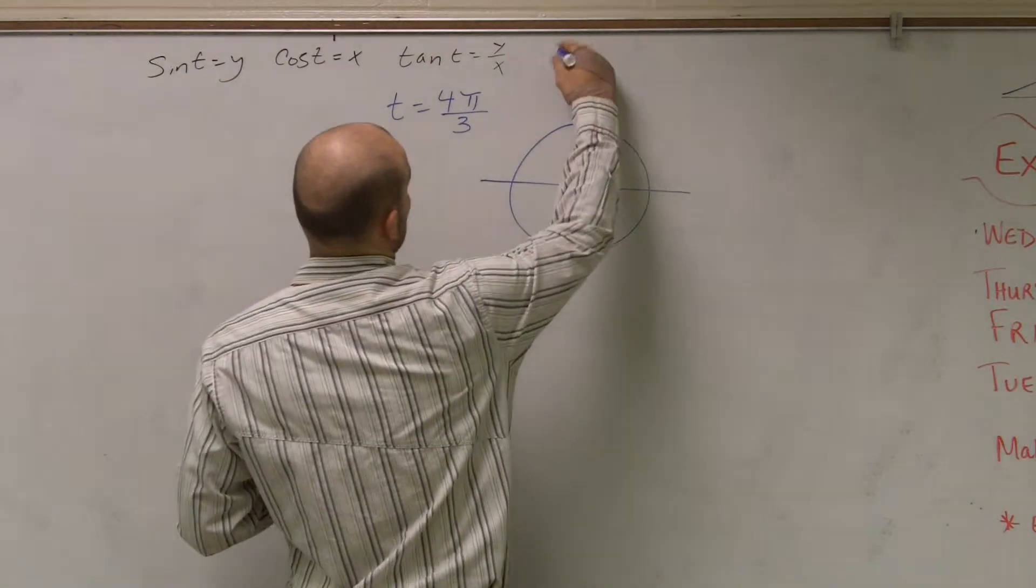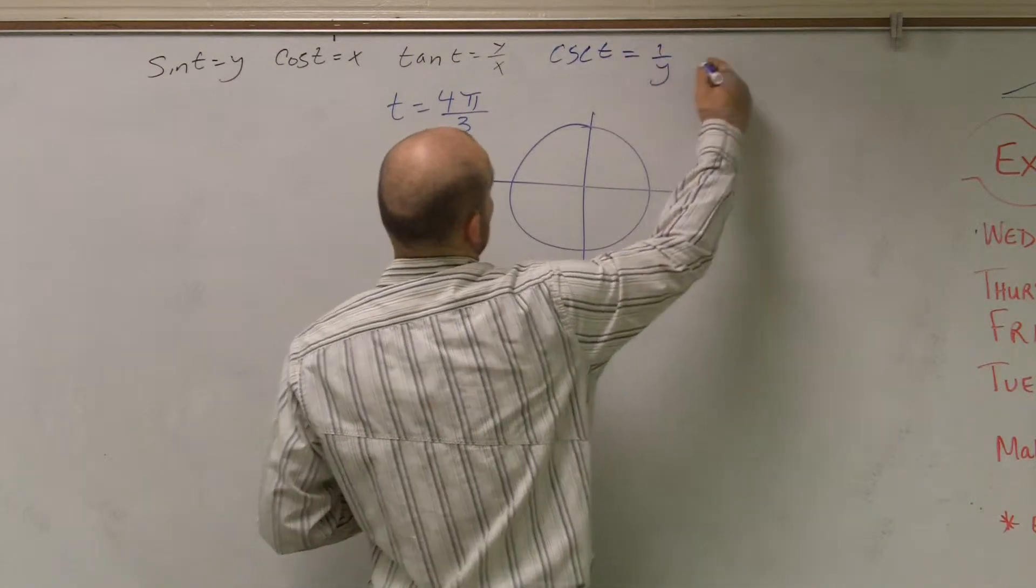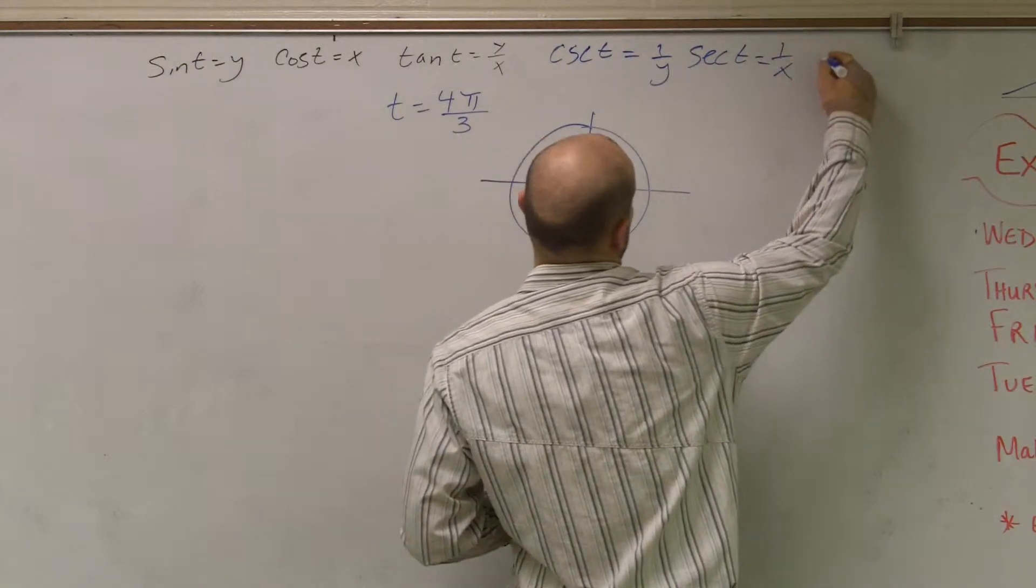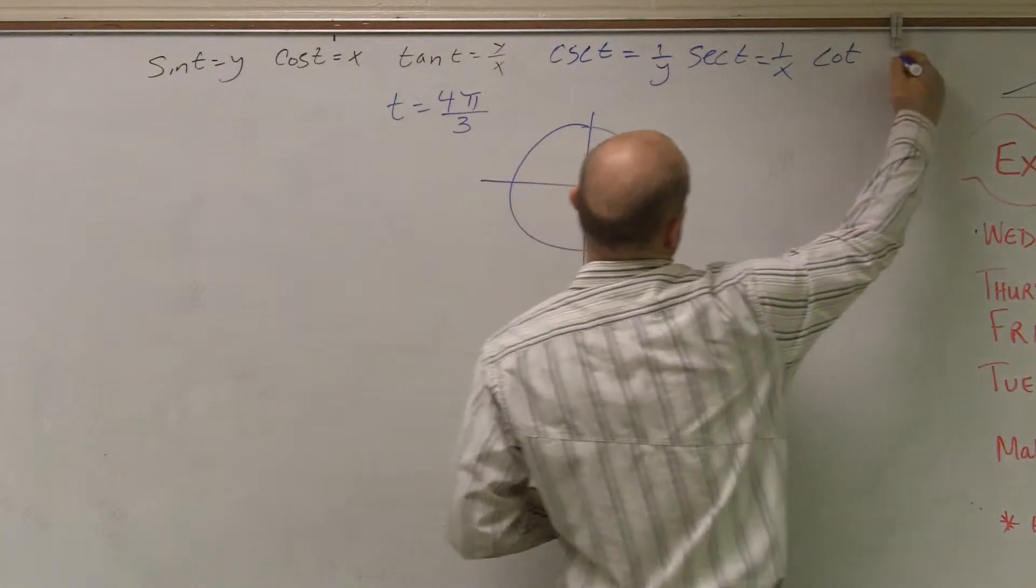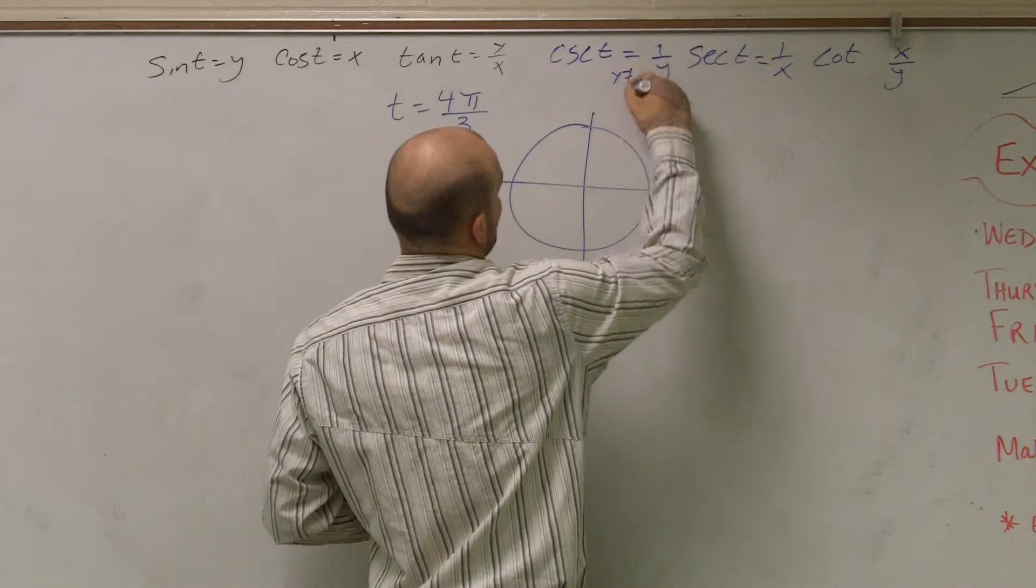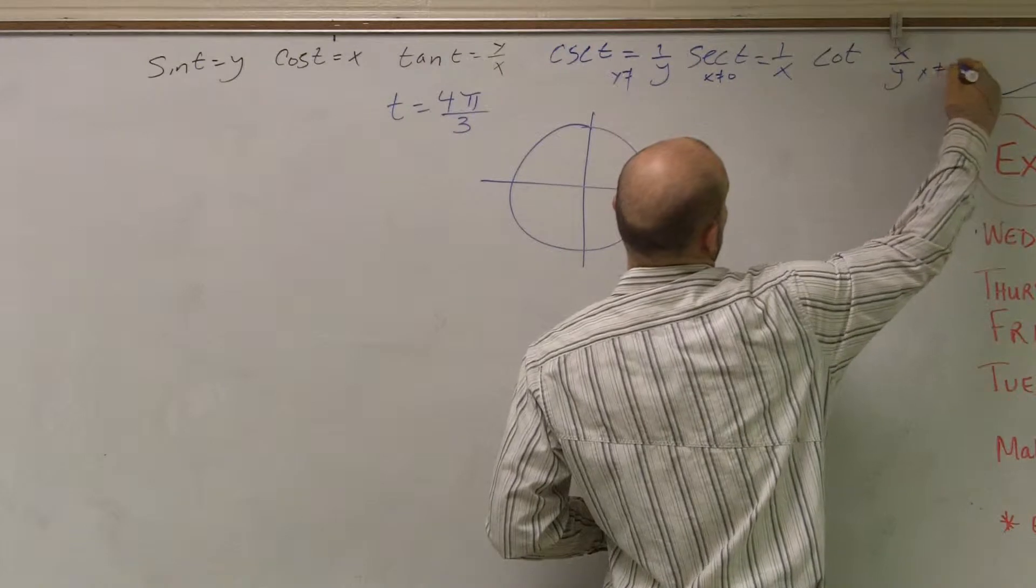And then they also want us to do cosecant of t, which is 1 over y, secant of t, which is 1 over x, and cotangent, which is x over y, where y cannot equal 0, x cannot equal 0, and y cannot equal 0.